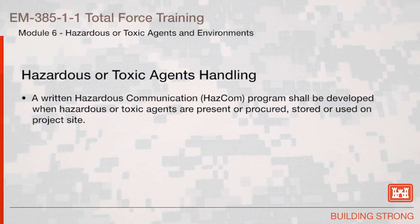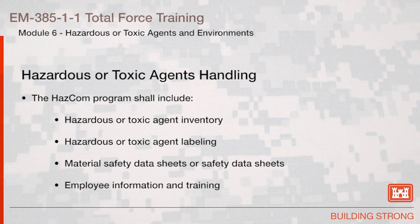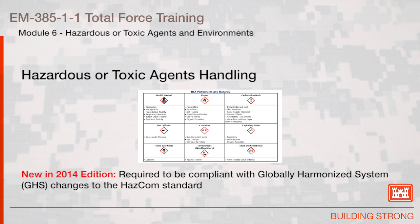A written hazardous communication, or HAZCOM, program shall be developed when hazardous or toxic agents are present or procured, stored, or used on project site. The HAZCOM program shall include hazardous or toxic agent inventory, labeling, material safety data sheets or safety data sheets, and employee information and training. This table of HCS pictograms and hazards provides an example new in the 2014 edition, which is required to be compliant with the globally harmonized system, or GHS, changes to the HAZCOM standard.